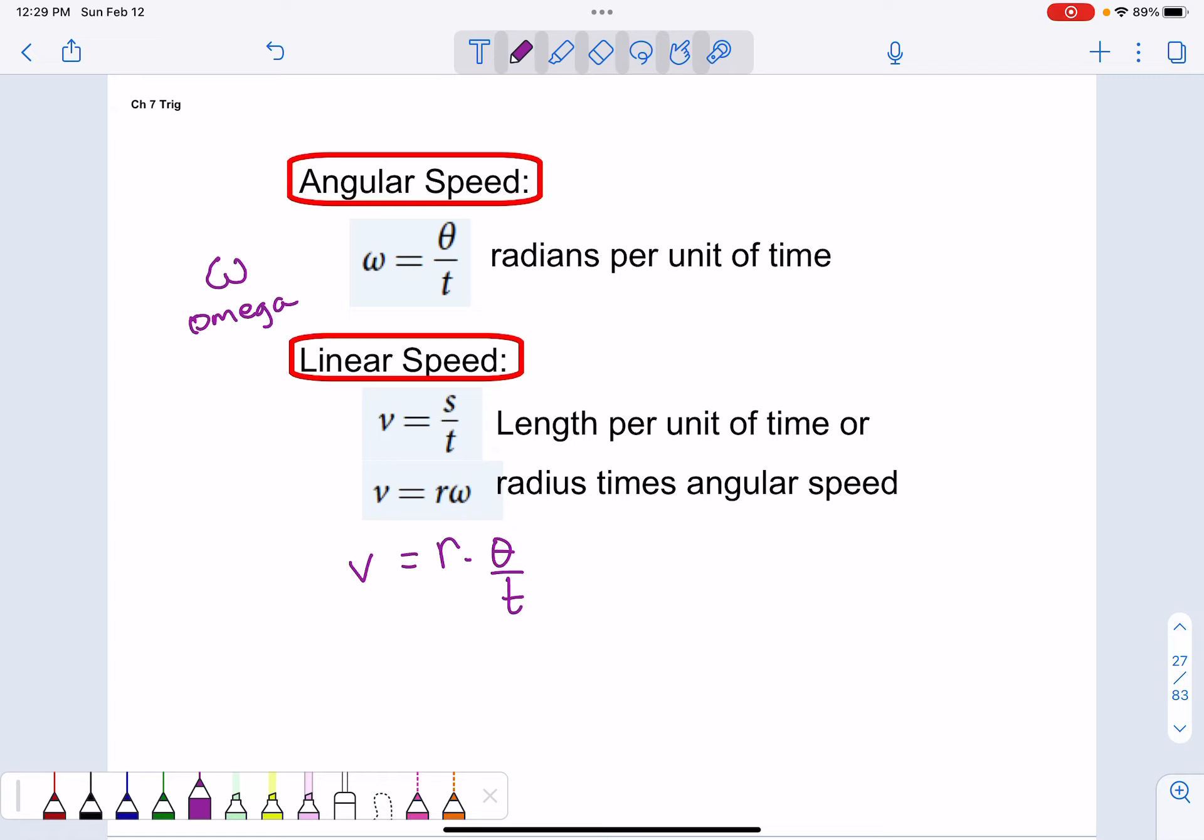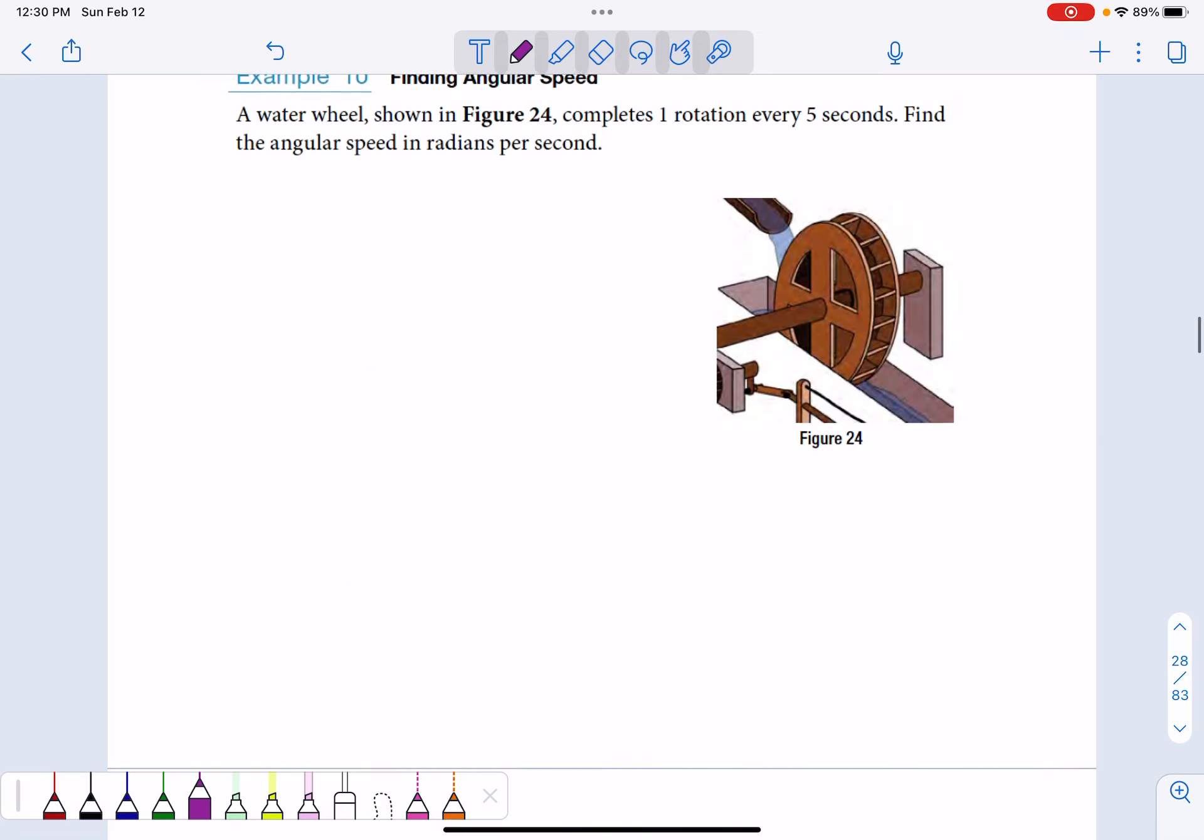These are just some formulas that are going to be helpful for you to know. Omega is angular speed, how many radians I've traveled per unit of time. Linear speed would have to be if I took and measured, like maybe I was on a carousel and my horse is right here, and I wanted to know how many miles per hour my horse is going, how many feet per second my horse is going.